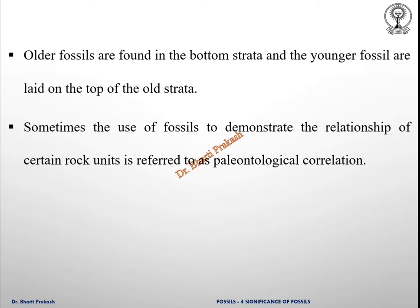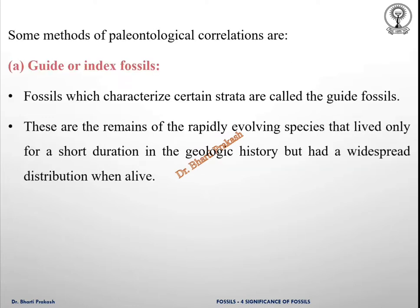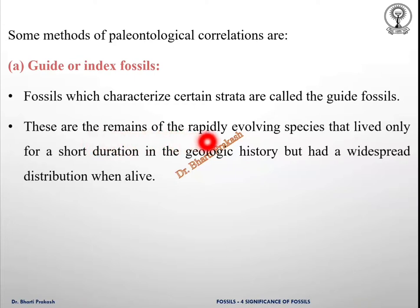Sometimes the use of fossils to demonstrate the relationship of certain rock units is referred to as paleontological correlation. Some methods of paleontological correlation are: number one, guide or index fossils. The fossils which characterize certain strata are called guide fossils. These are the remains of the rapidly evolving species that lived only for a very short duration in geologic history but had a widespread distribution when alive.